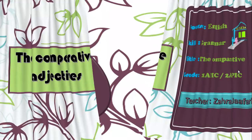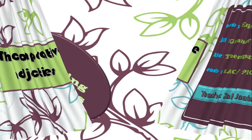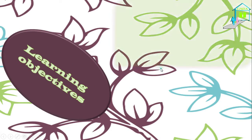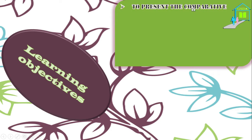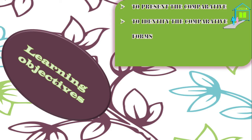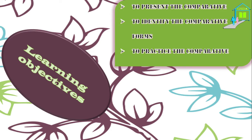Let's start by having a snapshot on our learning objectives. The first objective is to present the comparative — we will see what is the comparative and what do we mean by a comparative. Second, we will identify the comparative forms, how we form these comparative adjectives. And last, we will have a quiz to practice the comparative adjectives. You will have some exercises in order to practice the comparative adjectives.